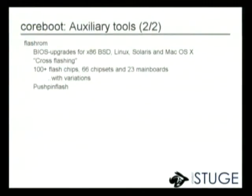Super IO tool, Intel tool, and MSR tool are all debugging utilities for development and troubleshooting — they're really good at decoding all the register values in the various chips in a PC. I also want to mention flashrom especially, which I've done a bit of work on. It's a BIOS upgrade tool for x86, BSD, Linux, Solaris, and Mac OS X, so you're no longer required to reboot onto that DOS floppy disk you have to create every time you want to upgrade your BIOS.